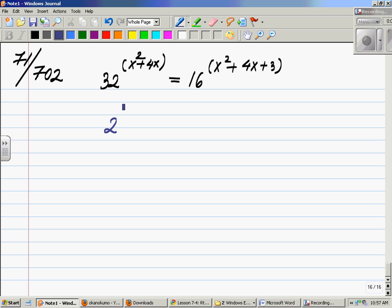If you think about 32, it's actually 2 to the power of 5, everything to the power of x squared plus 4x, which should equal 16, which is nothing else but 2 to the power of 4, everything to the power of x squared plus 4x plus 3.